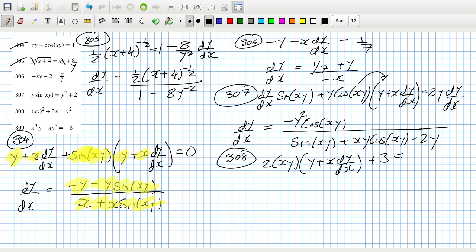plus 3 equals 2y dy/dx. So dy/dx equals minus 2xy squared minus 3 on the top, and then that's 2x squared y minus 2y.